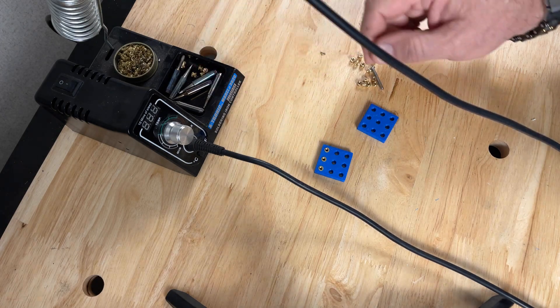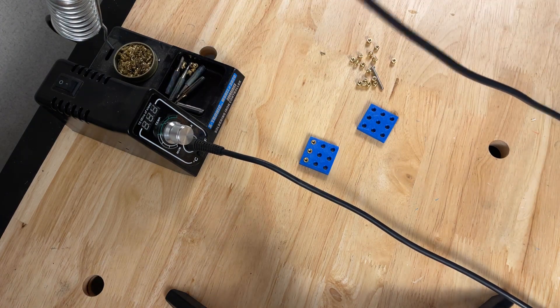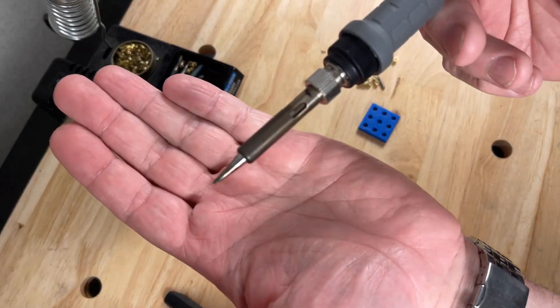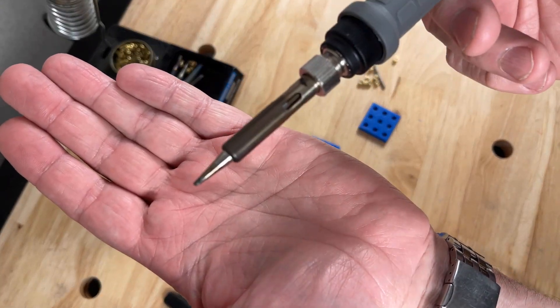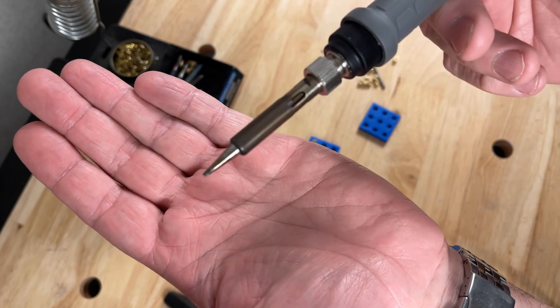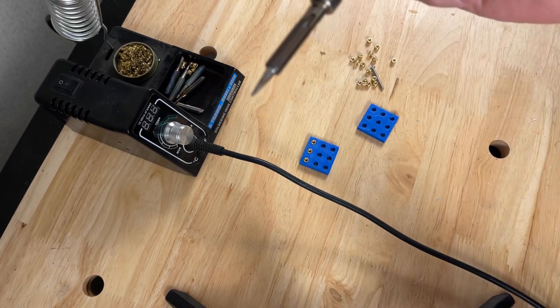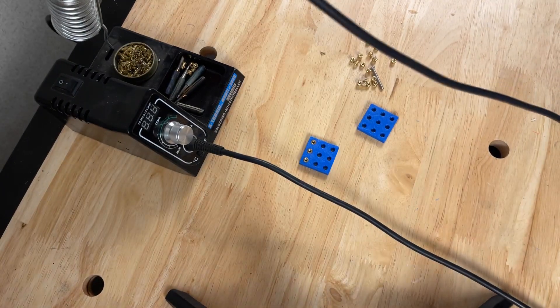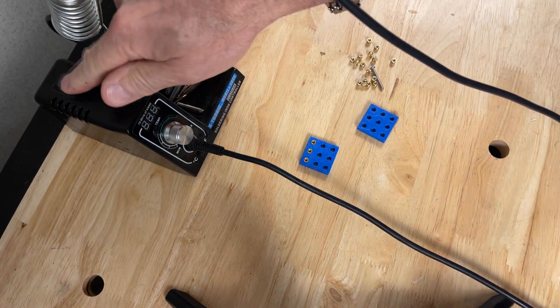Okay, we're back with the tip changed out on the soldering iron. Sorry, the camera doesn't like to focus on small objects, but there you go—just a regular soldering tip. This is kind of a broad tip, it's got a fairly steep angle to it. We'll go ahead and get the temp on the soldering iron back up to temperature again.